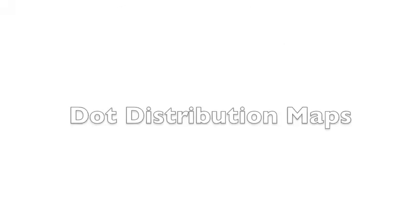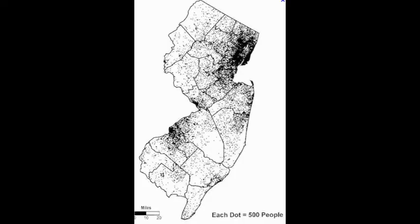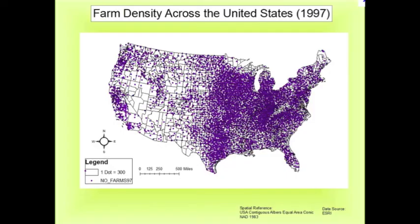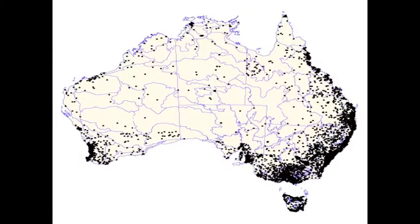Next we have dot distribution maps. On a dot distribution map, each dot has the same numerical value — it could stand for 1 or it could represent 10,000. Each dot is used to record data but also to show spatial patterns in distribution and dispersion. If we look at this population map of Australia, we see a pattern in the way people are distributed. Most Australians live along the coast, especially in the southeastern part of the island, while the interior has very few settlers, largely because it's desert in that region.